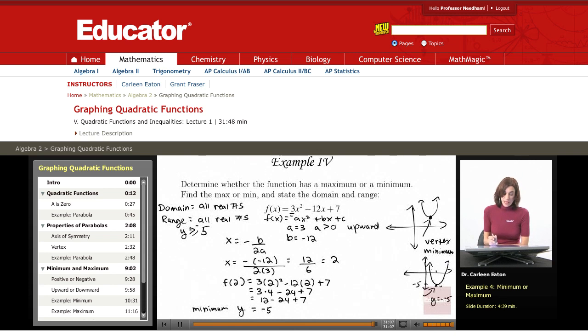So, we found that we had a minimum, and we know that because a is positive. We found that using the formula negative b over 2a to get the x-coordinate, which is 2. Then we found f of x using 2, so f of 2, to tell me that y equals negative 5.